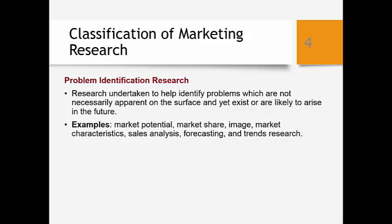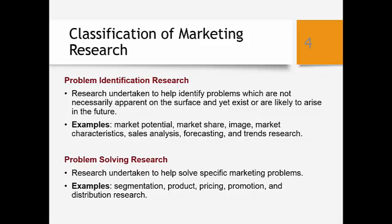In contrast, problem solving research is the research undertaken to solve specific marketing problems. When we say marketing problems, we usually refer to fundamental marketing issues — target market and marketing mix, also known as the 4Ps. So problem solving research revolves around segmentation, product, pricing, promotion, and distribution. Let me elaborate more on these two types of research.